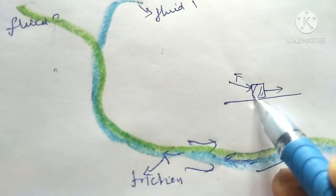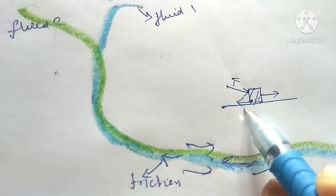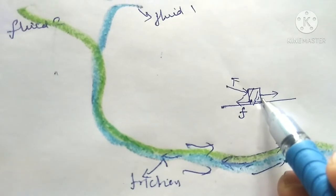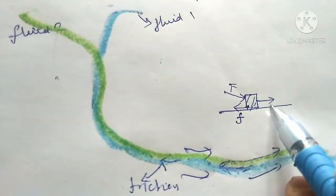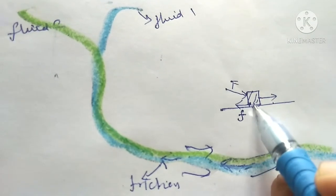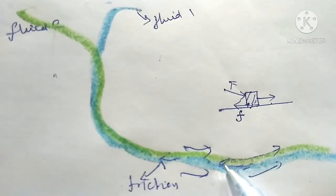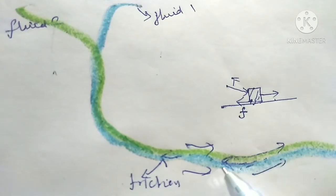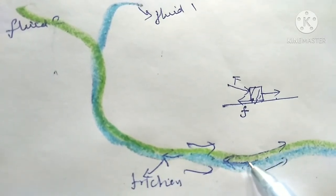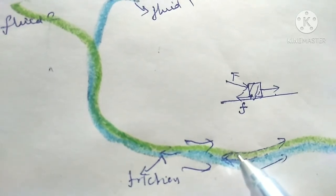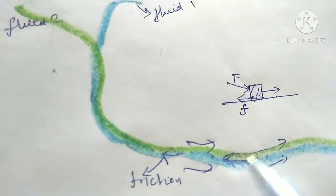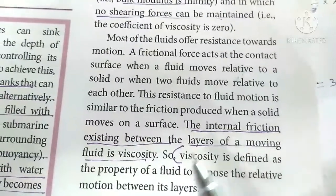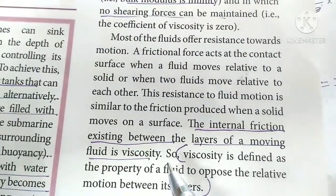The friction force acts in the opposite direction. When the solid moves on the surface, there is a friction force coming into play. This force is similar to the relative motion between two fluids. The internal friction existing between the layers of a moving fluid is viscosity.